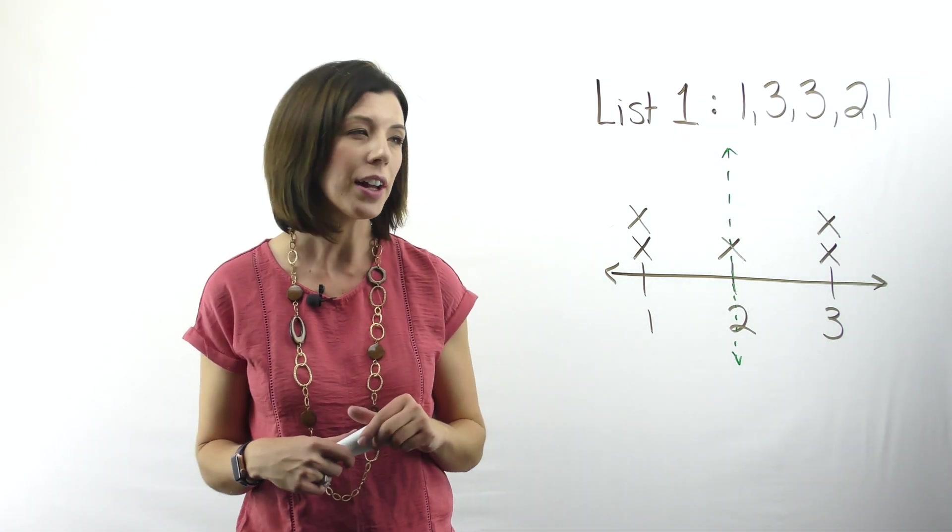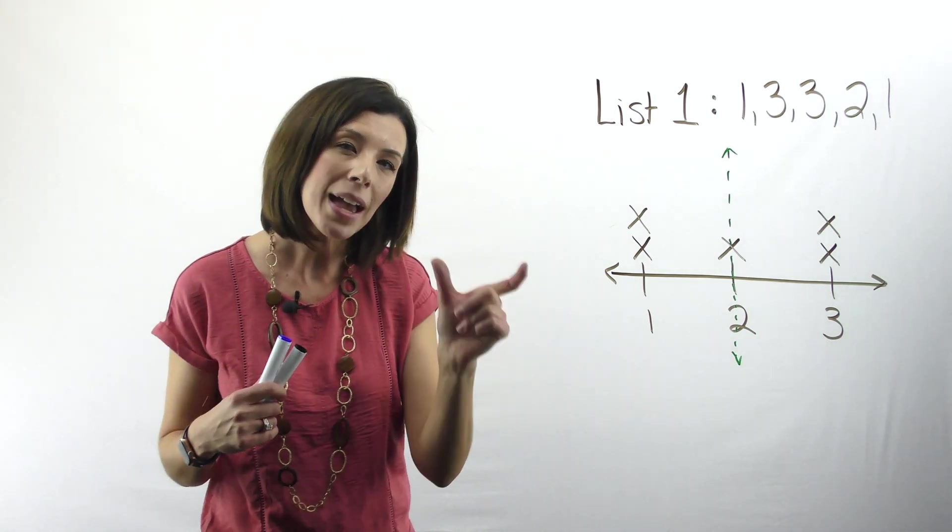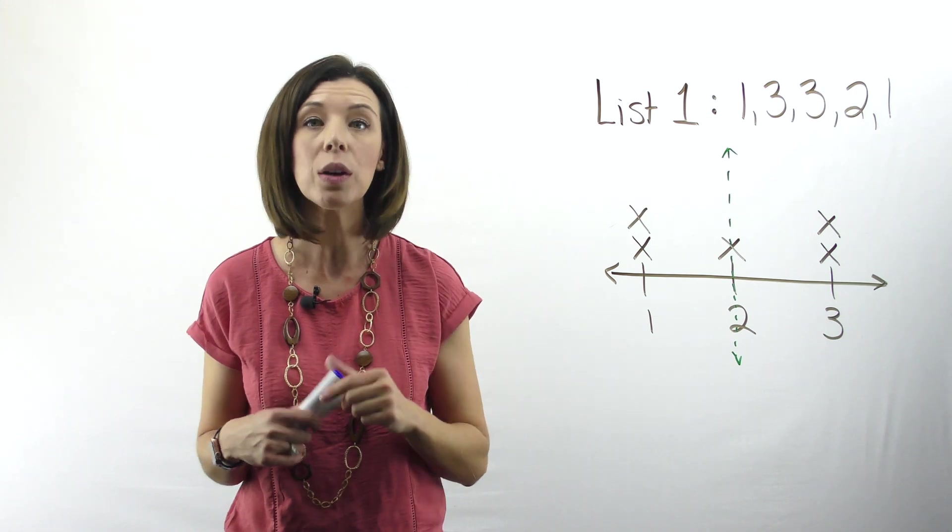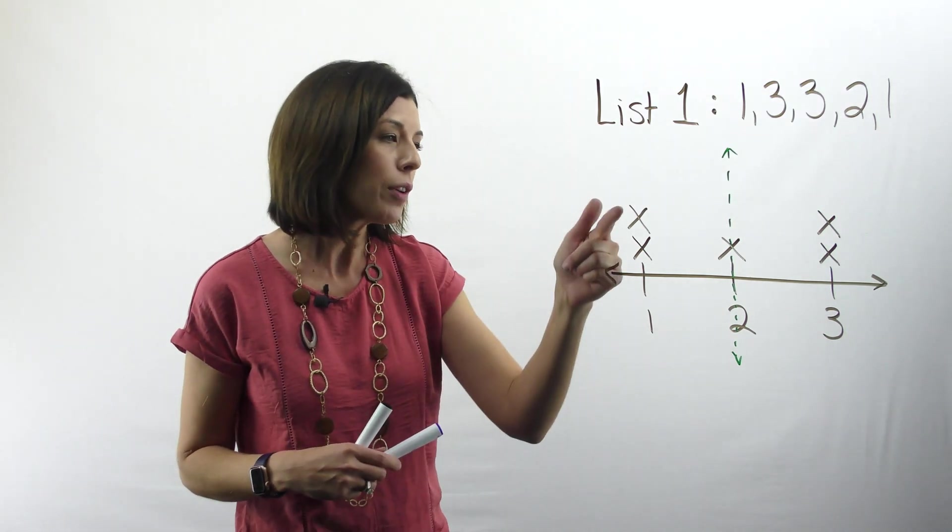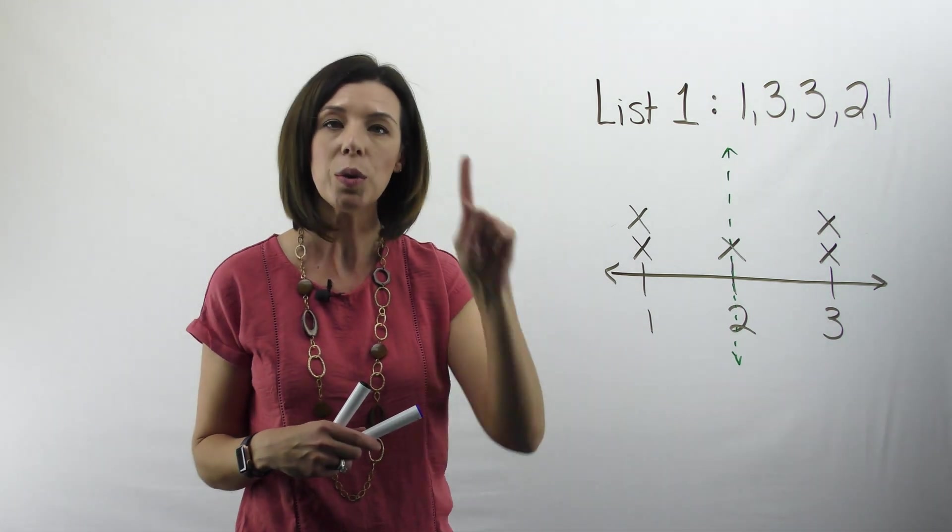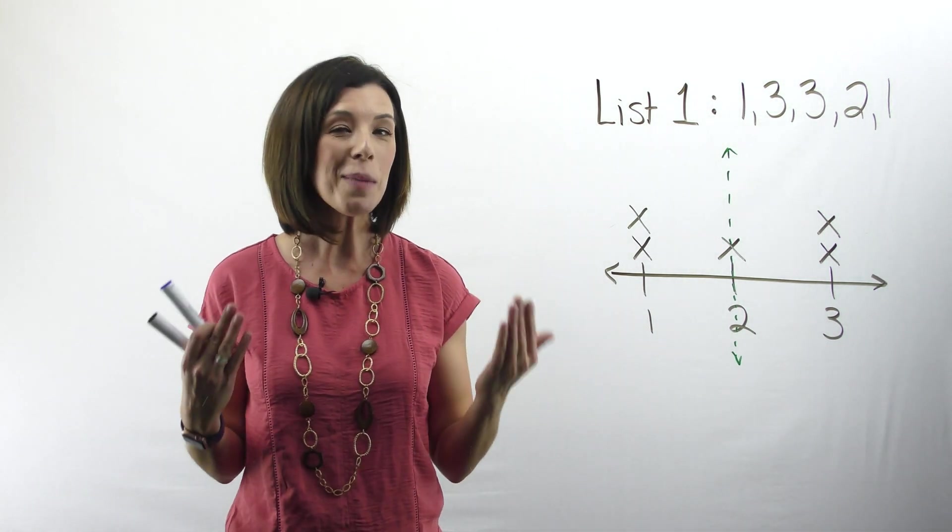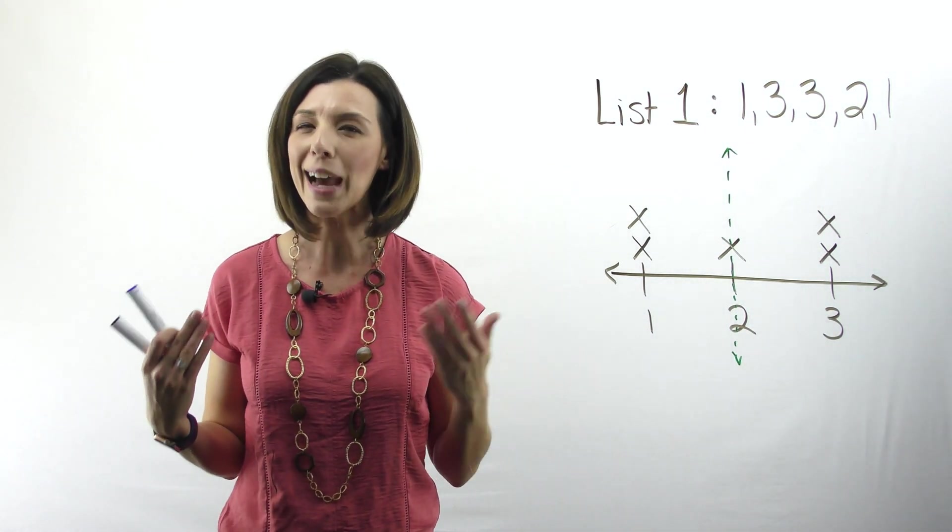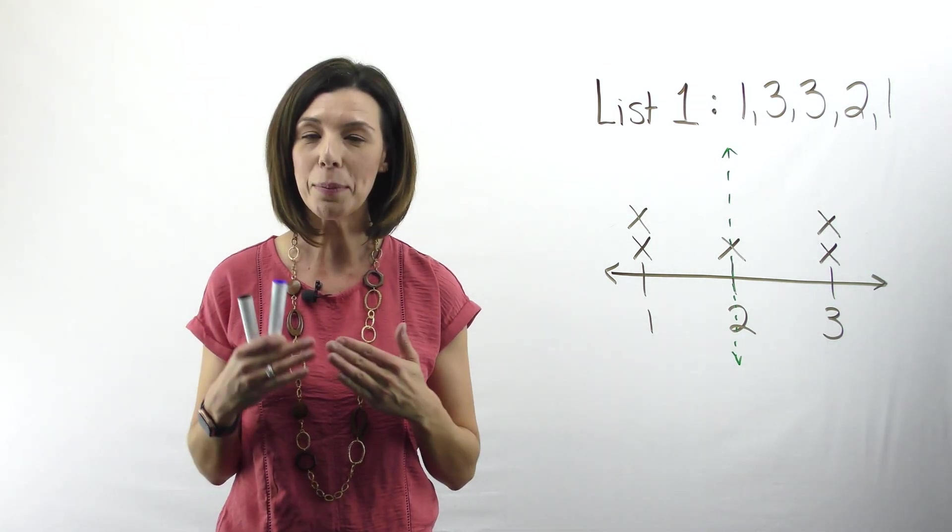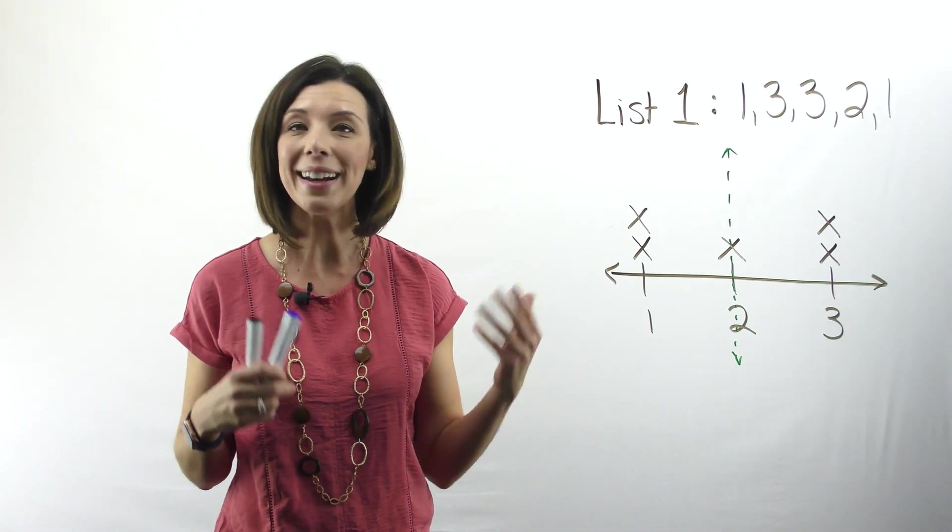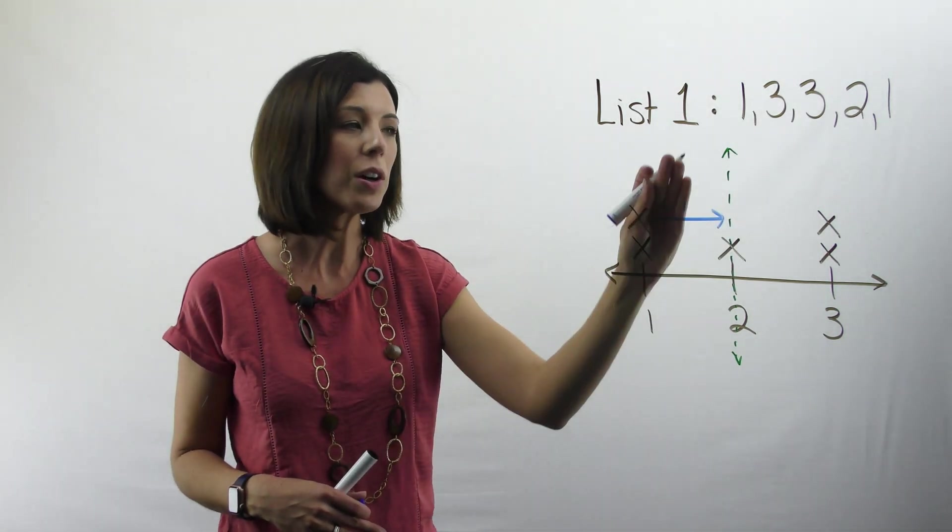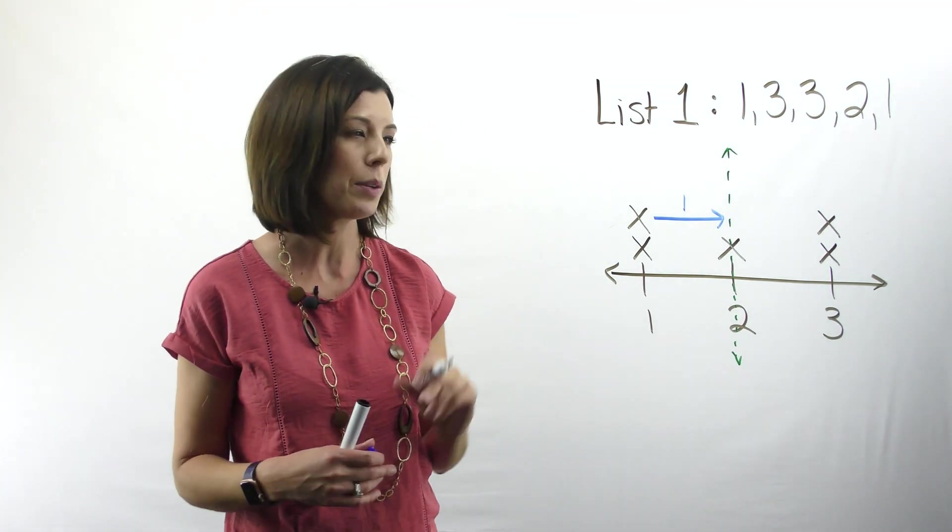Next, grab another color and we're going to literally measure the distance between each data point and the mean. And we're going to write this down. So from this data point right here to the mean, I can see that from one to two, it takes one. Now you might be thinking, gosh, this sounds a lot like absolute value. You are correct. We are literally finding the absolute value between each data point and the mean. I like to represent this with a little arrow and a one just so I know exactly what I'm doing.